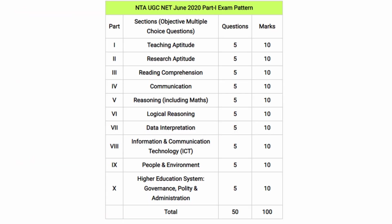Now let's look at the bifurcation of Paper 1. The ten sections are: Teaching Aptitude, Research Aptitude, Reading Comprehension, Communication, Reasoning, Logical Reasoning, Data Interpretation, Information and Communication Technology (ICT), People and Environment, and Higher Education Governance, Quality and Administration. These are relatively general in nature with some research and teaching aptitude testing. Each of the 10 sections carries 5 marks, totalling 100 marks for Paper 1.